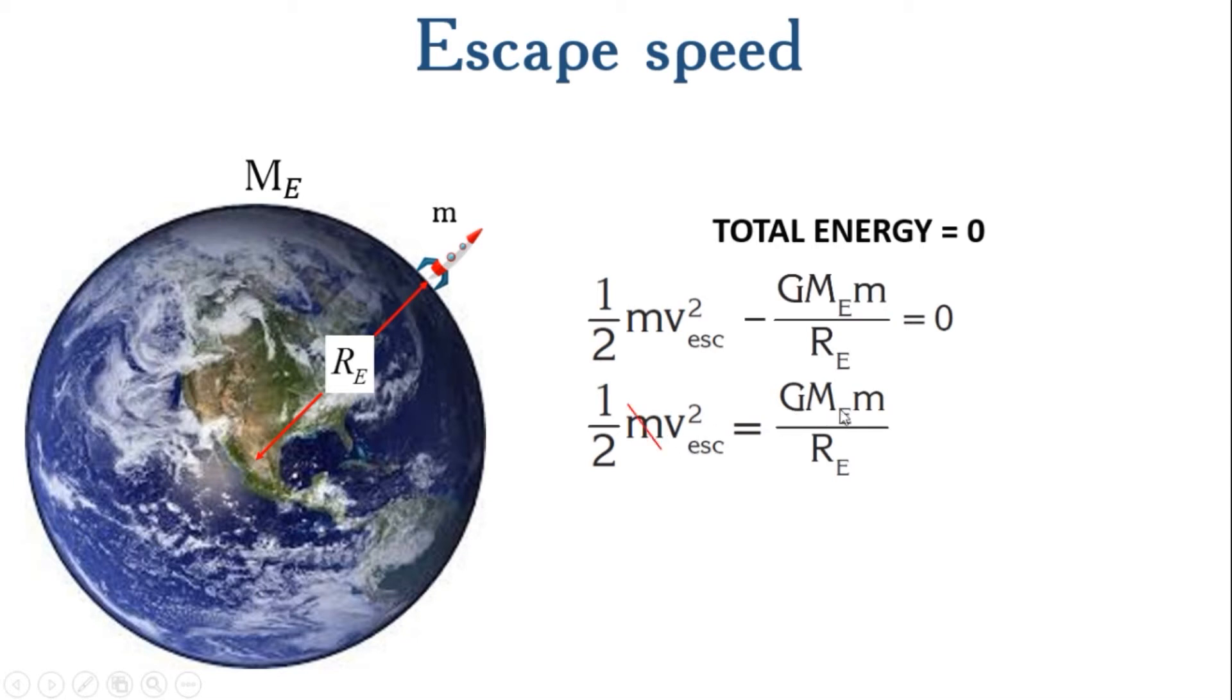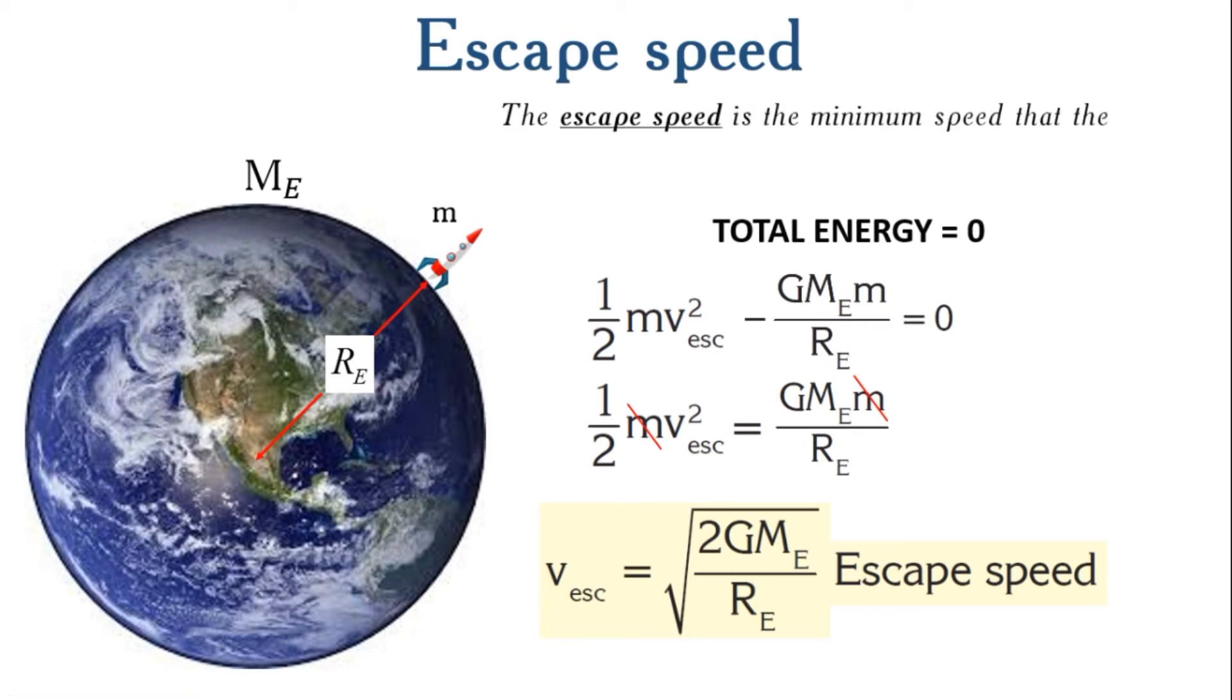Now we can cancel these two masses on both sides and rearrange this equation for the speed. And now we have the formula, which is in square root 2G mass of earth over the distance between the rocket or satellite and the earth. And this formula is called escape speed. In conclusion, we can define escape speed as this: The escape speed is the minimum speed that the rocket must have to overcome the gravity of the earth.